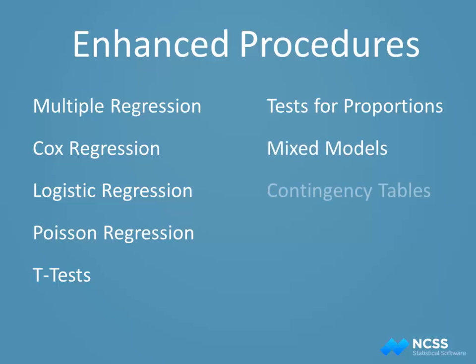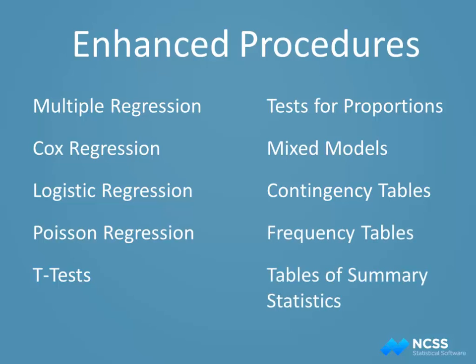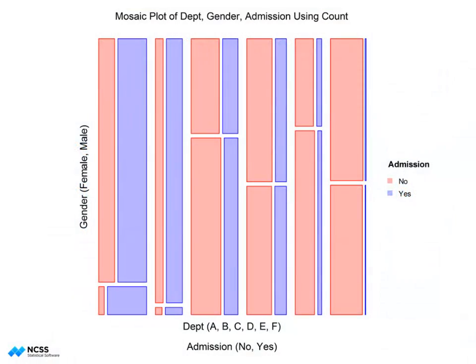Mixed models, contingency tables and chi-square tests, frequency tables, and tables of summary statistics have been improved. The graphics capability has been expanded in NCSS 9 with the addition of mosaic plots.